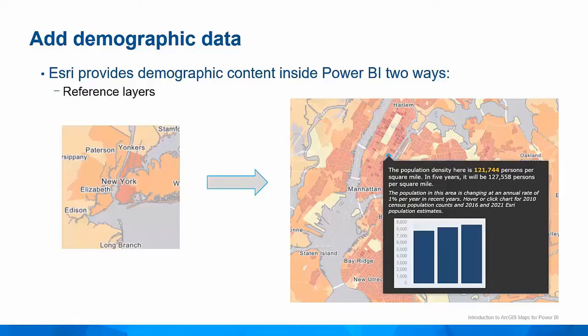Reference layers provide a glanceable view into the characteristics of the people that live in an area. We provide layers that show characteristics such as average household income, diversity index, population density, and more. Demographic reference layers are dynamic, showing you more detail as you zoom in and less detail as you zoom out. Clicking on a reference layer will also provide detailed information about that area.